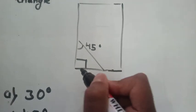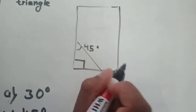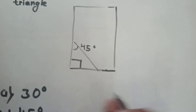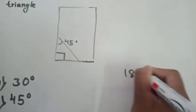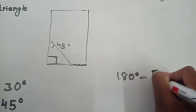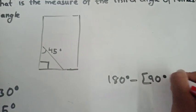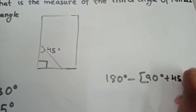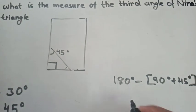In a right angle triangle, one angle will be 90 degrees and another angle is given 45 degrees. So, 180 degrees minus 90 degrees plus 45 degrees is equal to the third angle.